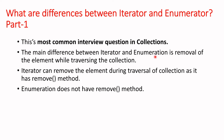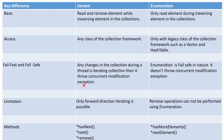The major difference between these two is removal of the element while traversing the collection. Iterator can remove the element during traversal because it has the remove method, while Enumeration doesn't have the remove method. The key differences are: basic access, fail-fast, fail-safe, limitations, and methods.